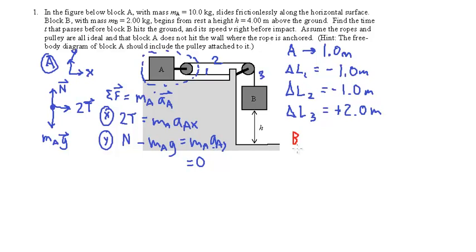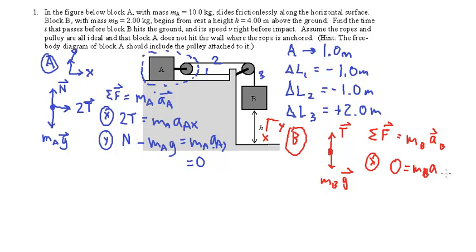Block B. Let's look at block B now. For block B, I'm going to use coordinates that go like this. I'm going to go X going down and Y going to the right. The reason for this, I'll show you in a second, but it's kind of neat.